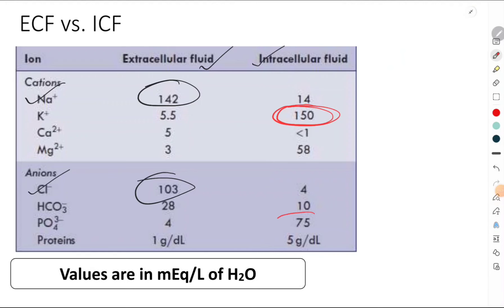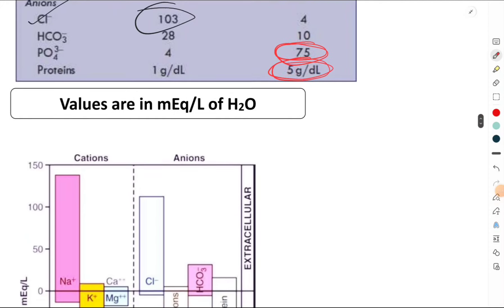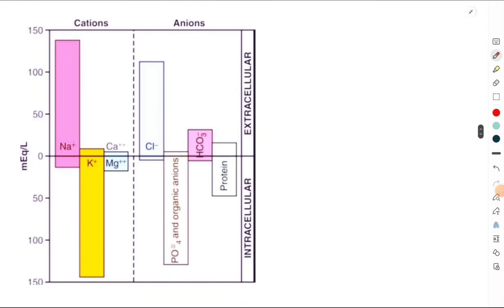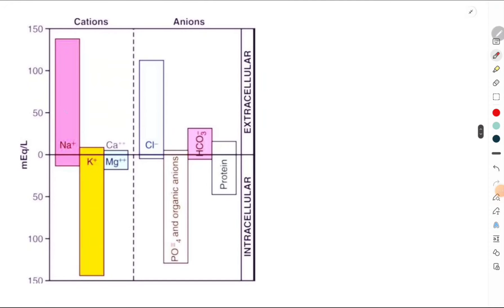The intracellular fluid is also rich in phosphates and has a high content of protein. So these differences are very important: extracellular fluid is rich in sodium and chloride, whereas the intracellular fluid is rich in potassium, phosphates, other organic anions, and also proteins.